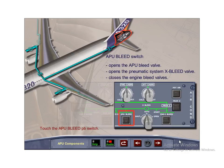When the APU bleed push-button switch is placed on, the APU bleed valve opens. The pneumatic system cross-bleed valve, if in the auto position, opens, and the engine bleed valves close.